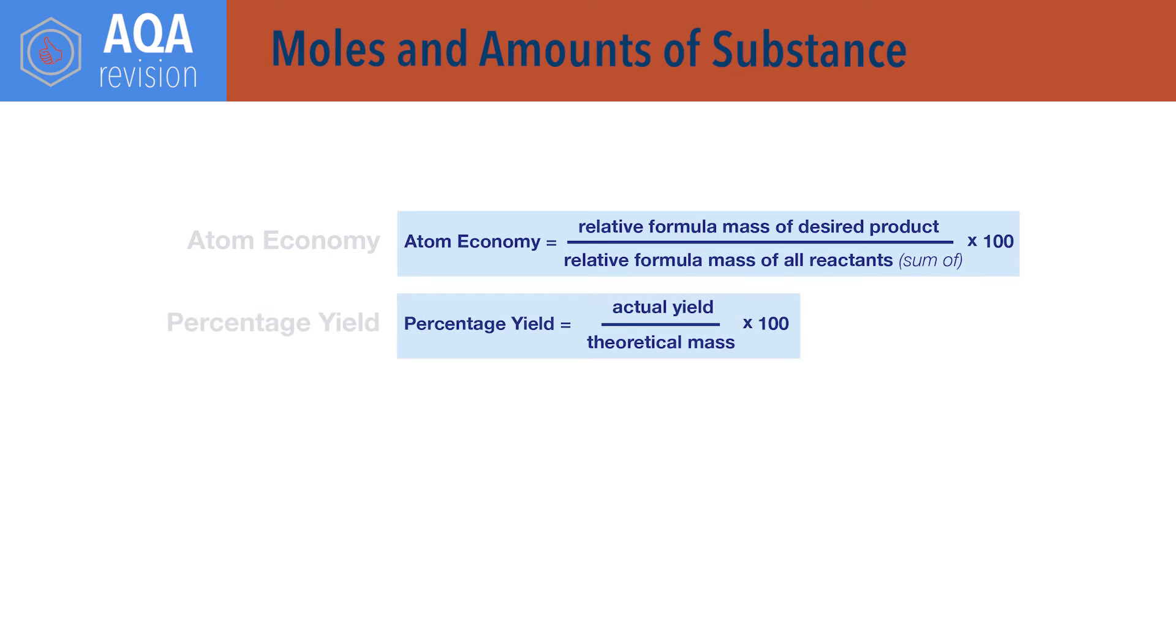Percentage yield equals actual yield or mass of product obtained, divided by the theoretical or maximum possible mass of product that could have been obtained, times 100.